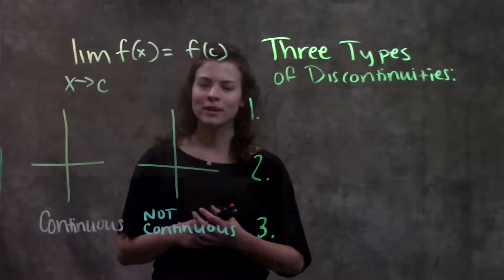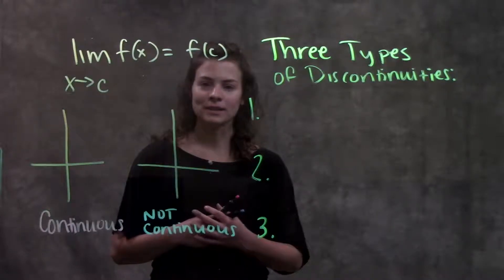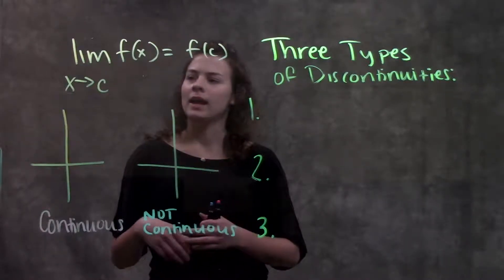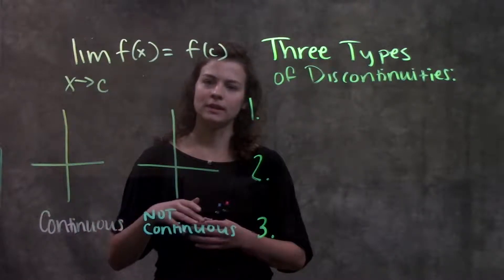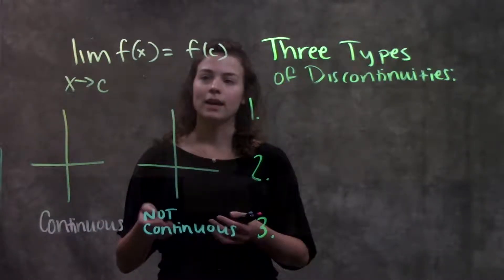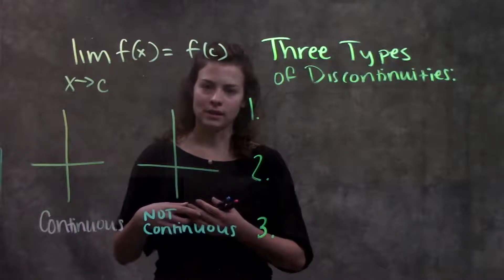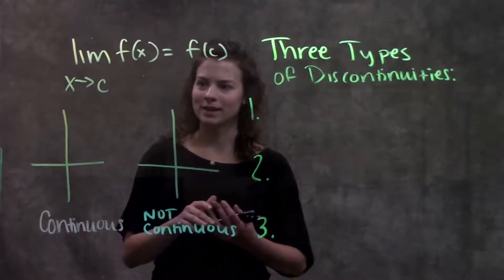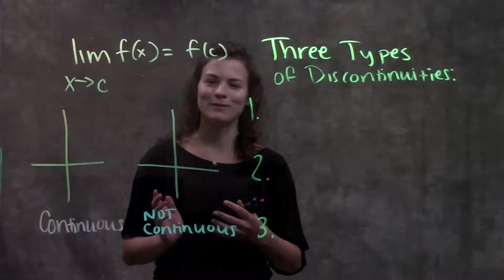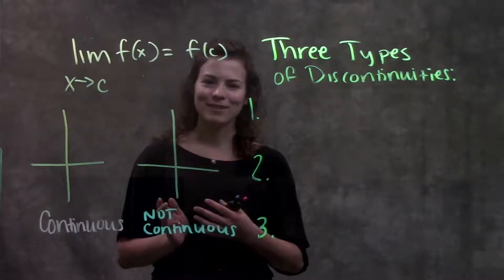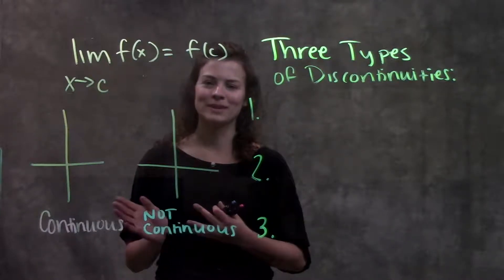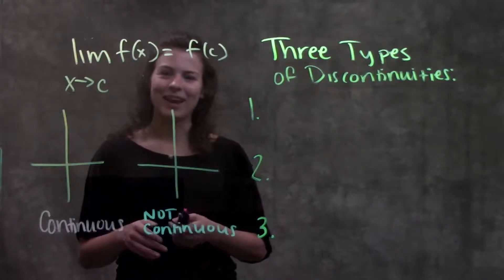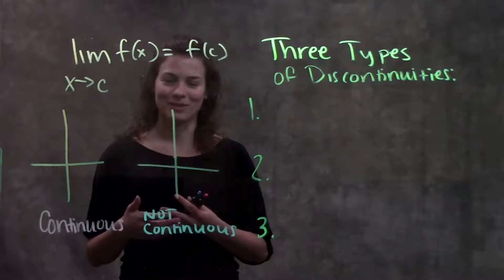The book gives us this definition of a continuous function: if the limit as x approaches c of some function f(x) is equal to f(c), then that function is continuous. When you first look at this, it can be confusing — whenever things are written in mathematical terms, it's always more confusing than it needs to be. So let's draw this out and hopefully it'll make more sense.